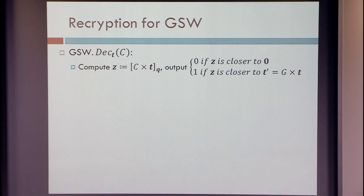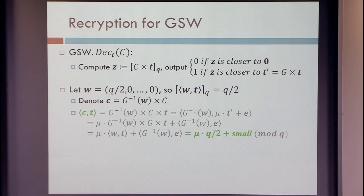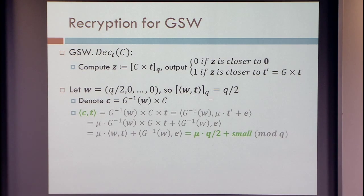Let's get it into a more convenient form before we start trying to compute it. Here is an equivalent procedure. Look at this vector that has Q over 2 in the first coordinate and zero elsewhere. The inner product between this and T is exactly Q over 2. Once you have this ciphertext matrix, look at what you get by applying G inverse to this vector W — you take every entry in W, expand it to its binary representation, then multiply by your ciphertext and take the inner product with T. You open the parentheses and what you get is an inner product between G inverse of W and T times C, and G and G inverse cancel, giving you mu times the inner product between W and T plus a little bit of noise.